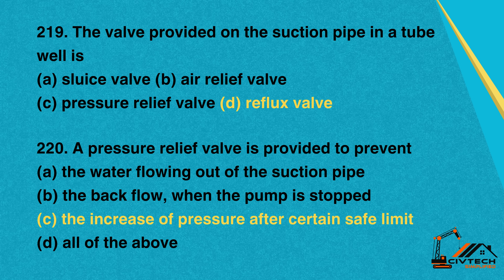Question 220: A pressure relief valve is provided to prevent. A. The water flowing out of the suction pipe. B. The back flow when the pump is stopped. C. The increase of pressure after a certain safe limit. D. All of the above. Correct option: C. The increase of pressure after a certain safe limit.